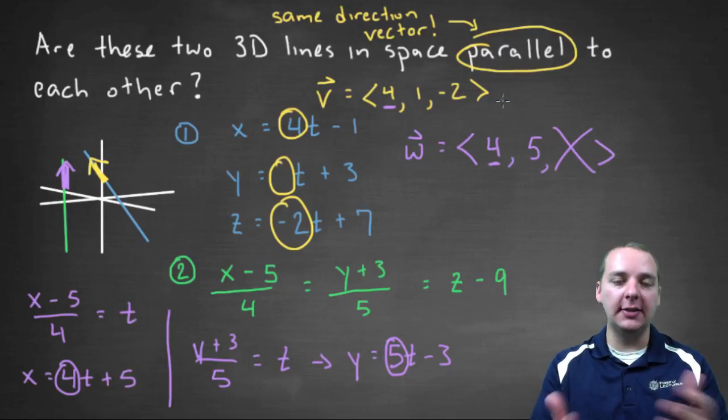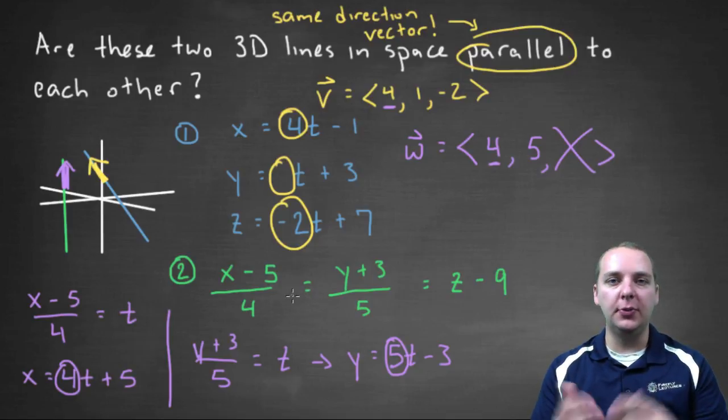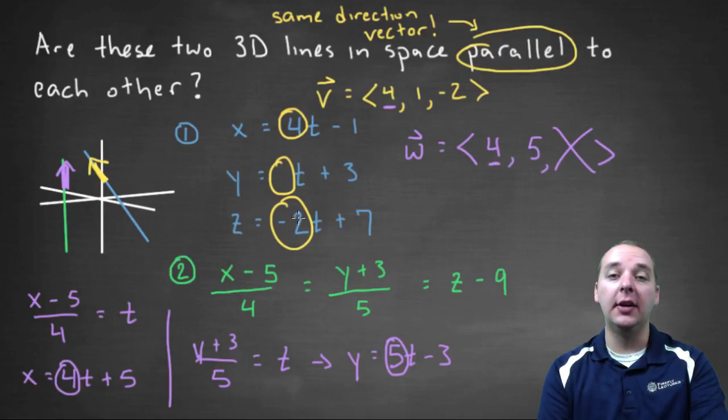So anyways, this is how you check to see if two lines are parallel in three dimensional space. If your line is in parametric form, you can quickly see the direction vector. And if it's using symmetric equations, then you would change it to parametric form so you can see the direction vector. And then you can tell if the two lines are parallel.